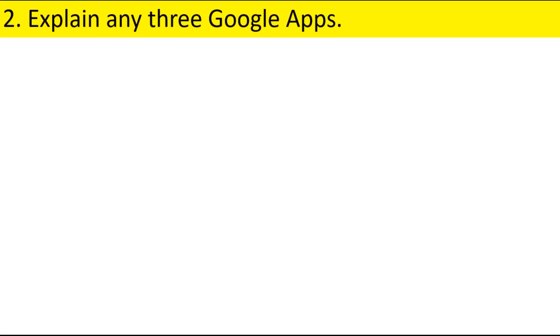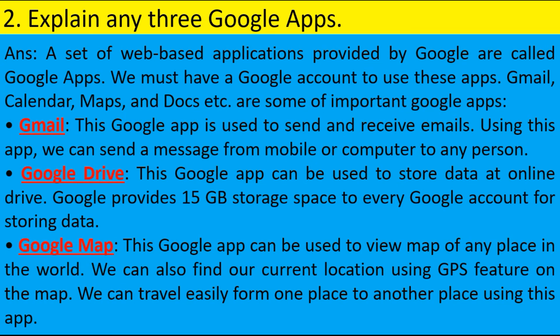Second, explain any three Google Apps. A set of web-based applications provided by Google are called Google Apps. We must have a Google account to use these apps. Gmail, Calendar, Maps, and Docs, etc., are some of the important Google Apps. Gmail: This Google App is used to send and receive email. Using this app, we can send a message from a mobile or computer to any person. Google Drive: This Google App can be used to store data on an online drive. Google provides 15 GB of storage space to every Google account. Google Maps: This app can be used to view maps of any place in the world. We can also find our current location using GPS features on the map, and we can travel easily from one place to another using this app.